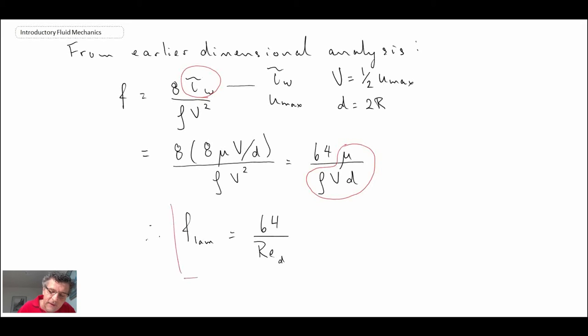So therefore the friction factor for laminar flow is equal to 64 divided by the Reynolds number based on diameter. And so that is a very nice clean result that we get. And that is the friction factor for laminar flow.